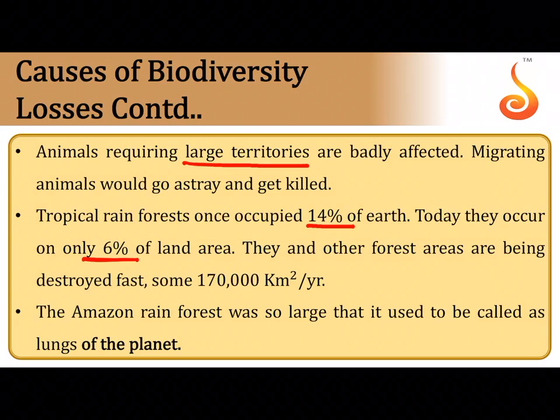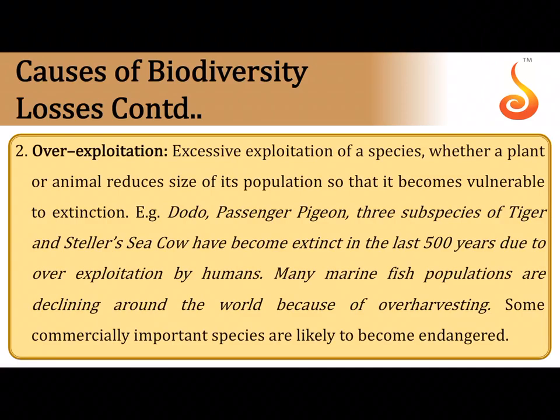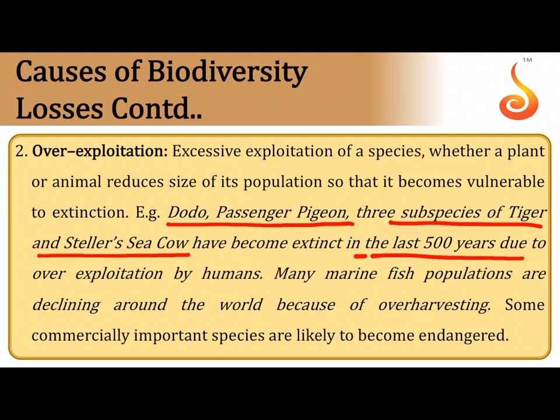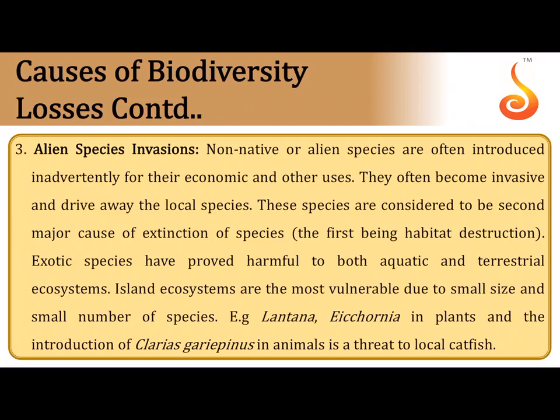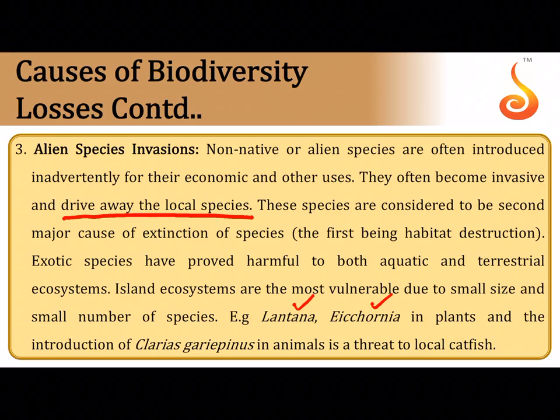Over-exploitation has led to extinction of species like the dodo, passenger pigeon, three subspecies of tiger, and the Stellar's sea cow in the last 500 years. Alien species invasion: when alien species are introduced from foreign lands into a local area, they compete with local varieties, become dominant, and drive away local species of plants and animals. Common examples include the plant Lantana and water hyacinth (Eichhornia) — the 'terror of Bengal' — introduced for ornamental flowers but now taking over local inland water bodies.